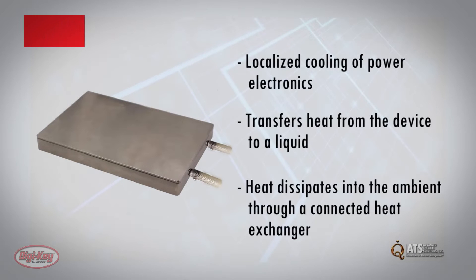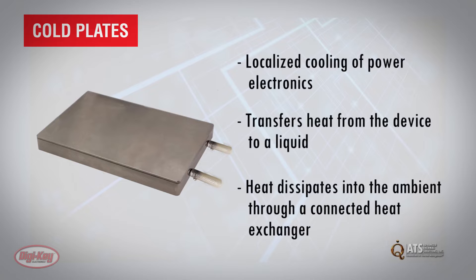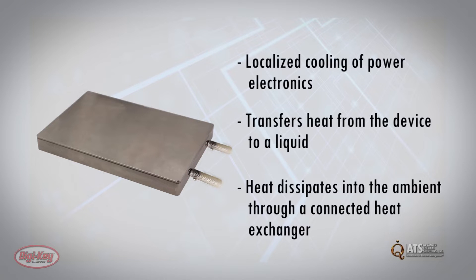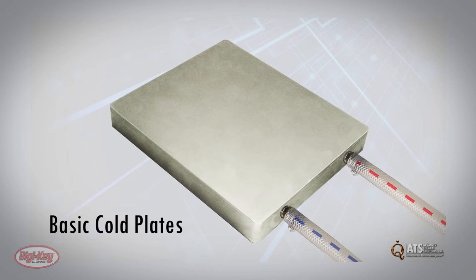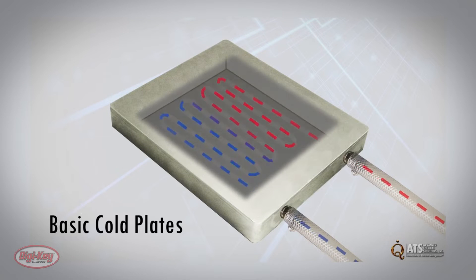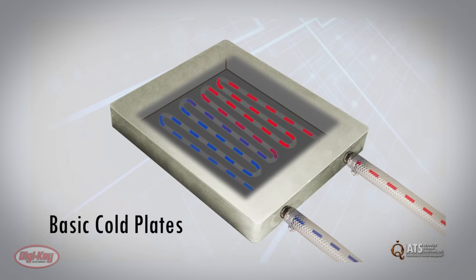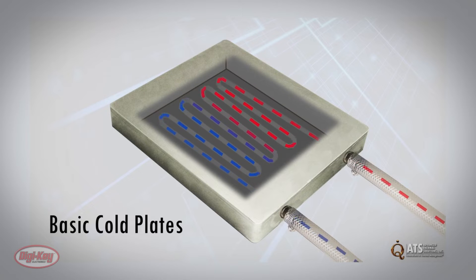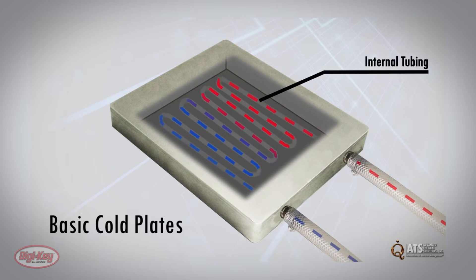One approach for thermal management is the use of cold plates. Cold plates provide localized cooling of electronics by transferring heat from a hot device to a liquid that flows to a remote heat exchanger and dissipates either into the surrounding air or to another liquid in a secondary cooling system. At their basic level, cold plates are metal blocks that have inlets, outlets, and internal tubing to allow liquid coolant to flow through.